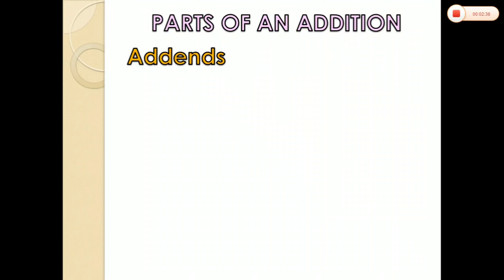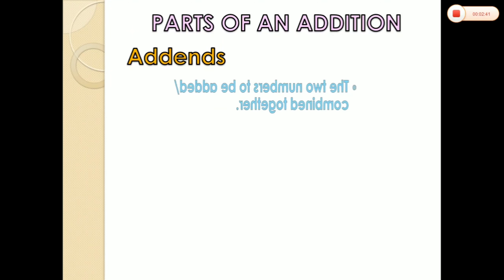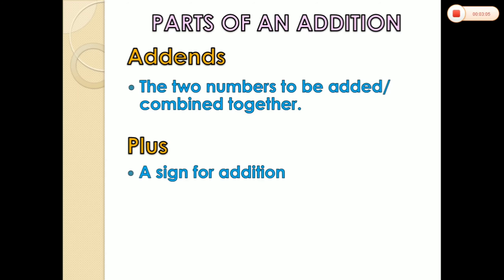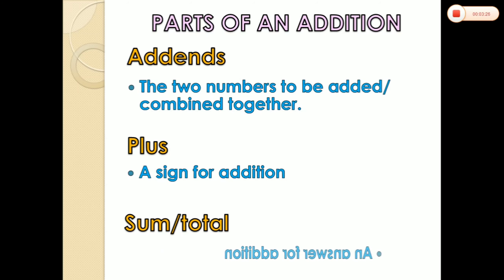The first one is addends. Addends means the two numbers to be added or combined together. Next one is plus. Plus means a sign for addition — this is the symbol that we are using for adding numbers. And lastly, the answer for addition is what we call sum or total, which means an answer for addition.